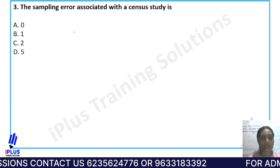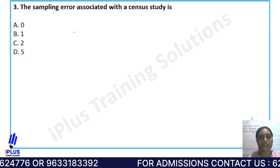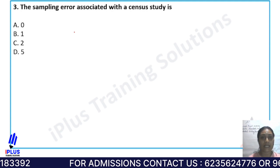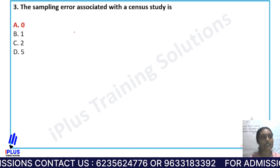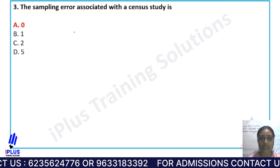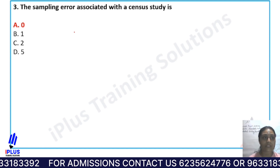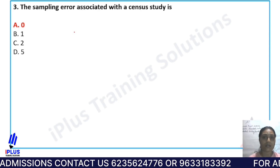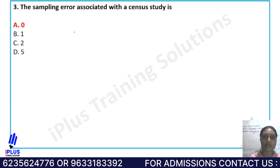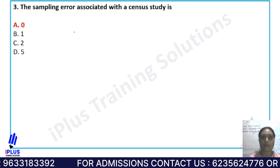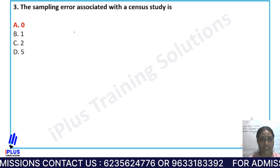The answer here is 0. In a census study, all observations from the total population are included, so there is no sampling involved. Therefore, the sampling error associated with a census study is zero, because the sample is the same as the entire population.